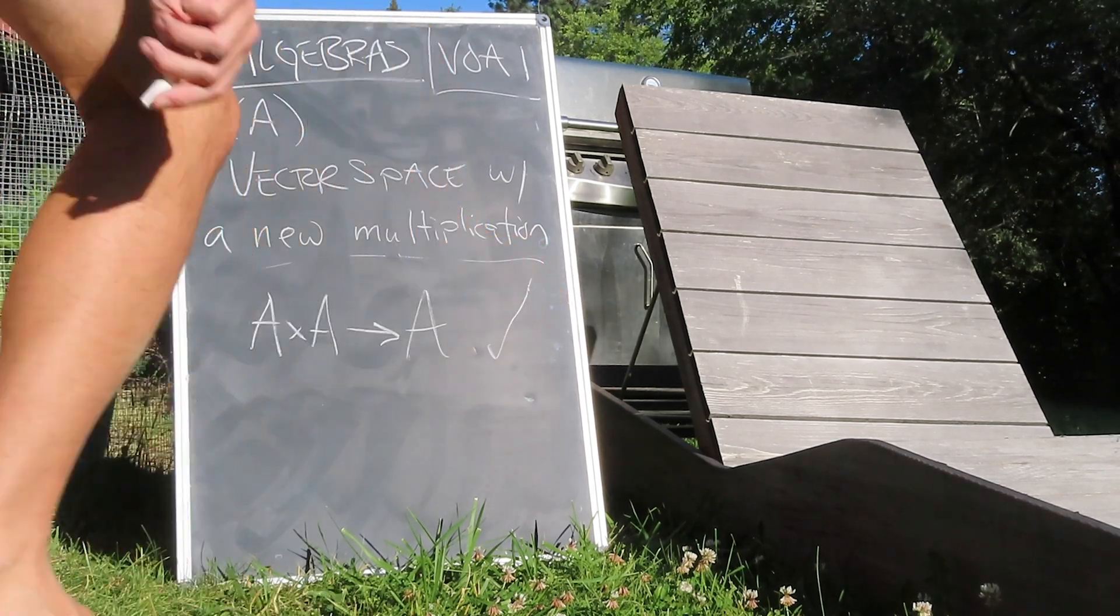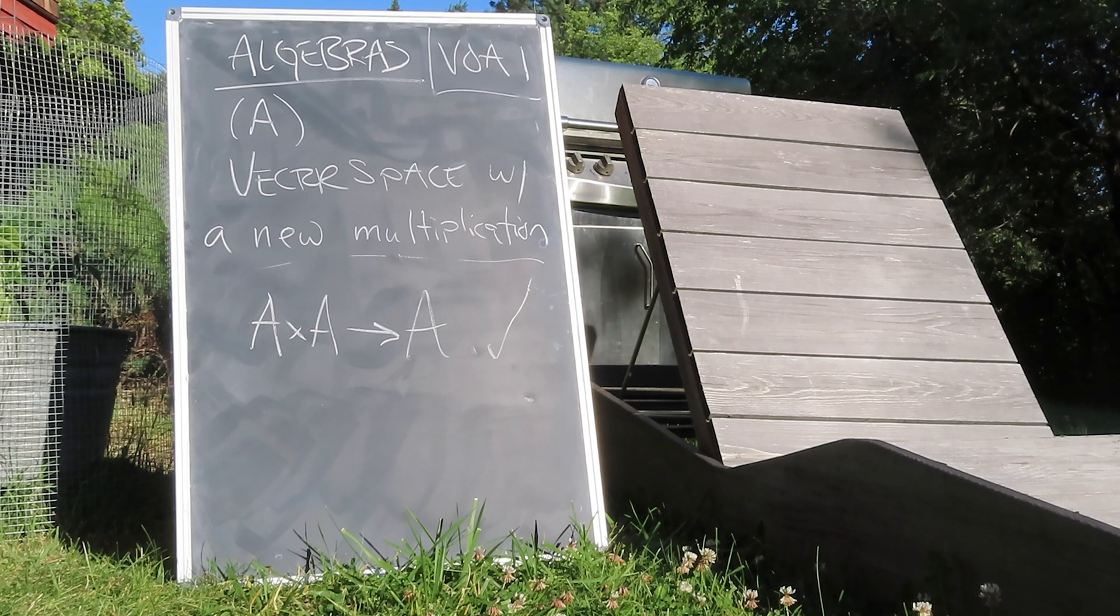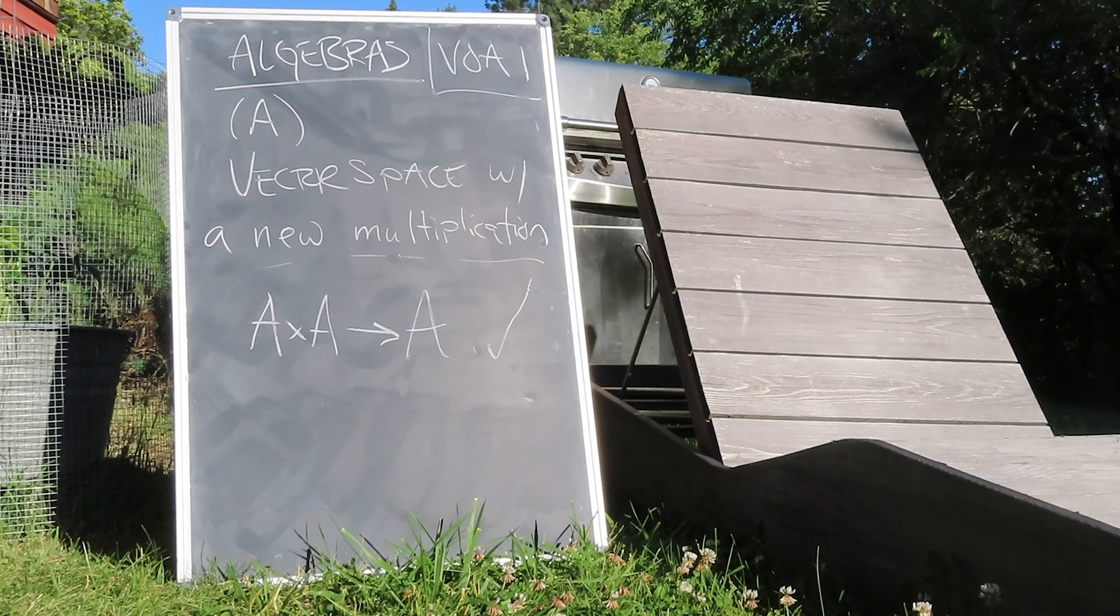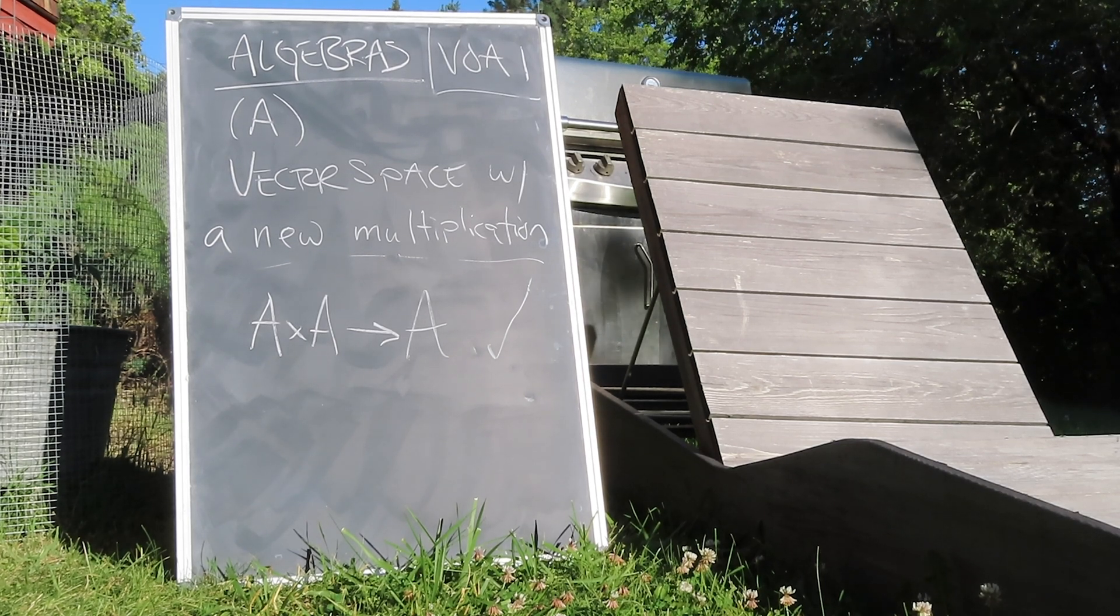Here our generic algebra is denoted capital A, and our underlying field, as always, is F, which could be thought of as, say, the complex numbers.